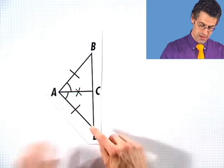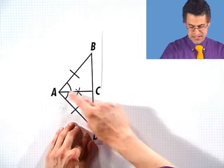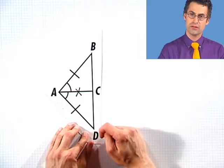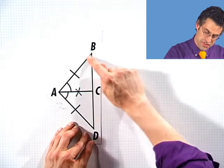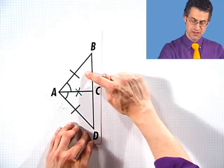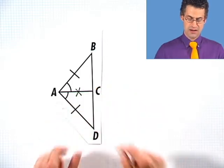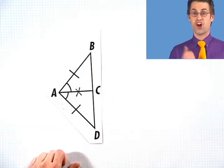So I have side-angle-side of this triangle congruent to side-angle-side of this triangle. Since side-angle-side are congruent, these two triangles are congruent.